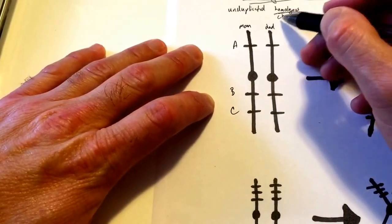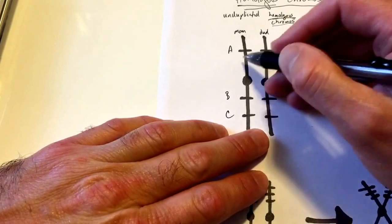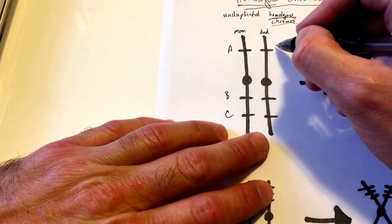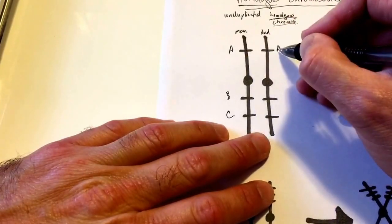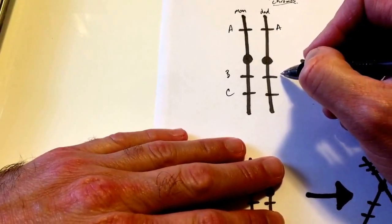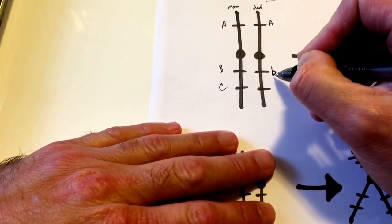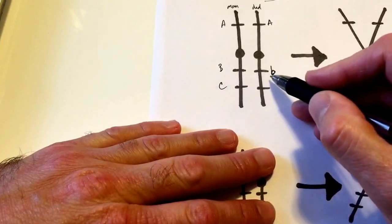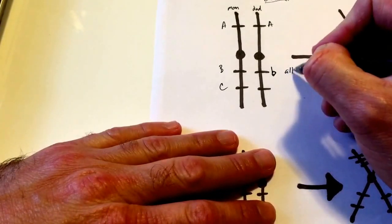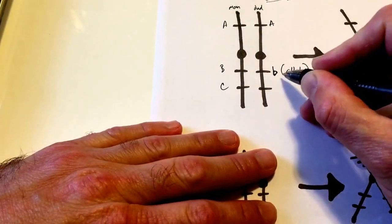We inherit homologous chromosomes from mom and dad, so the chromosome from dad contains the same genes which we inherited from mom. We may inherit the A gene from dad just as we do from mom, but we may have a different version of the same gene. I'm going to illustrate this different version of the B gene by indicating it with a lowercase b. Different versions of the same gene are called alleles — this term describes different versions of the same gene.